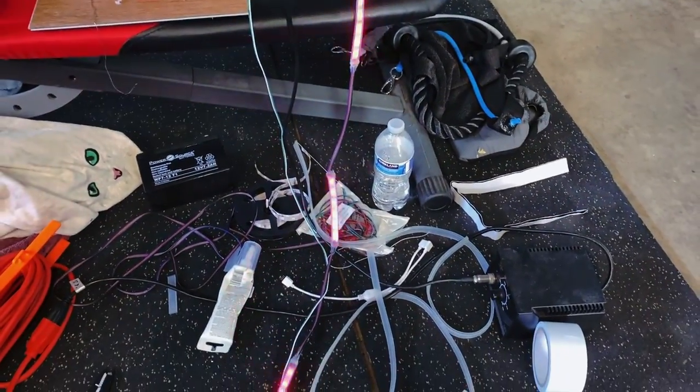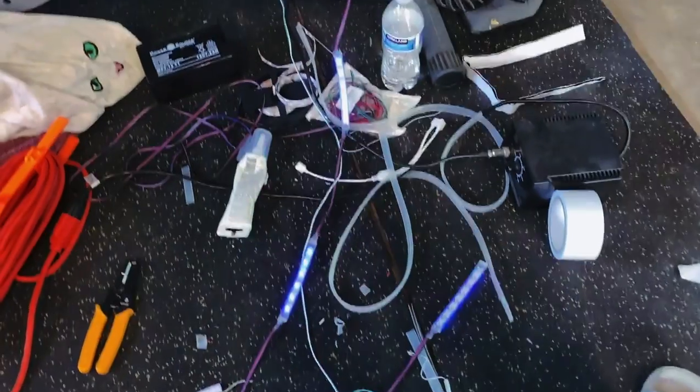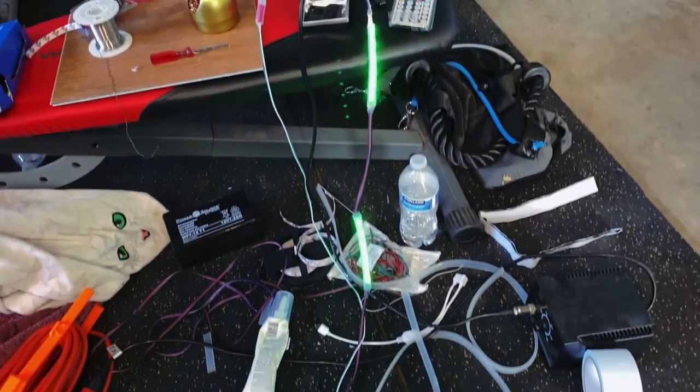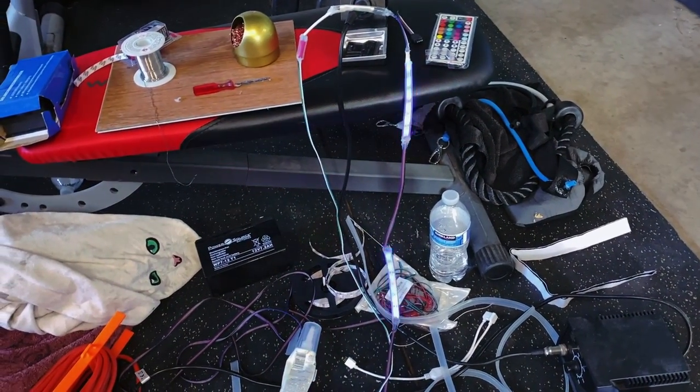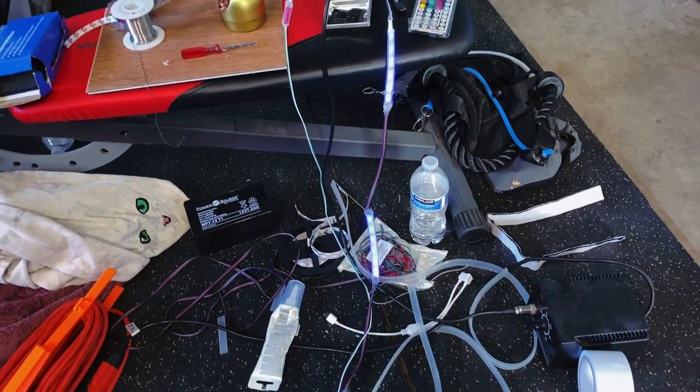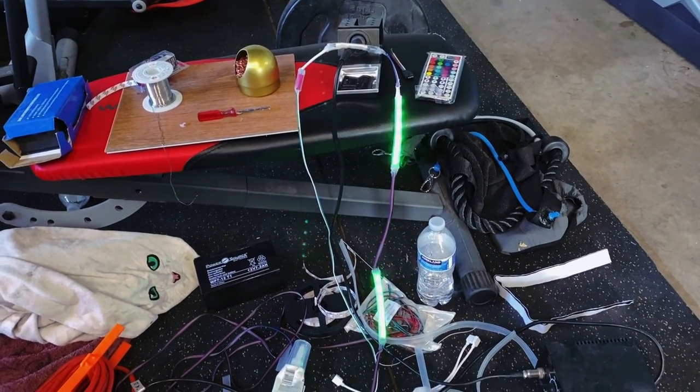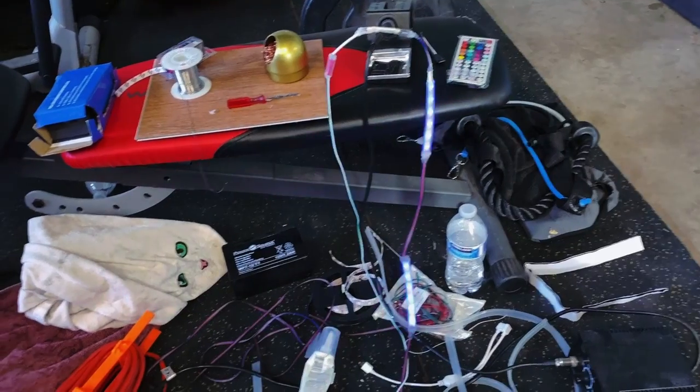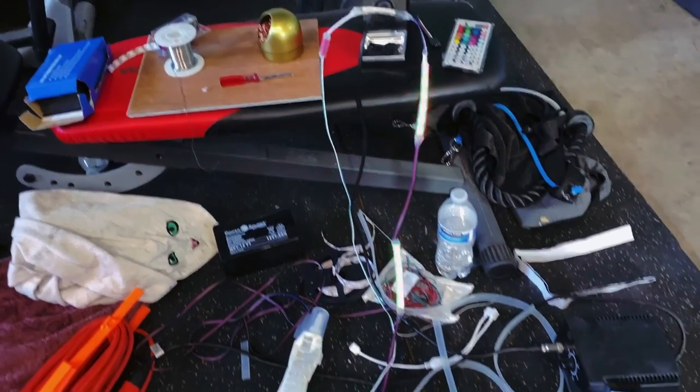The next thing to do is hook up the dusk to dawn sensor, the photo sensor, so that it doesn't waste the battery during the day and only when it is about to be nightfall, it turns on these lights.